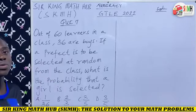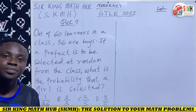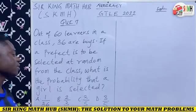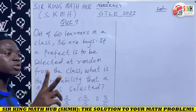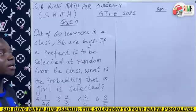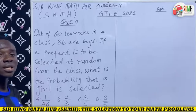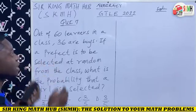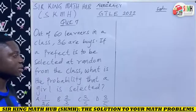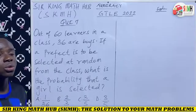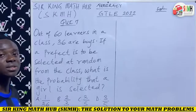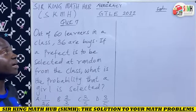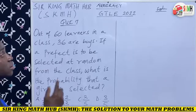So clearly, this question falls under probability. To calculate the probability of selecting a girl, we need two main items. One, the sample space — which refers to the total number of learners in the class. And then two, we also need the number of girls in the class. So let's quickly provide an answer to this.